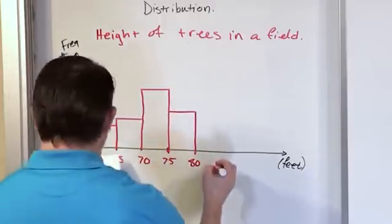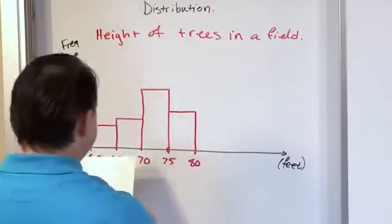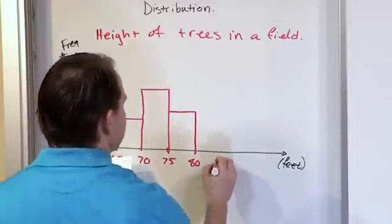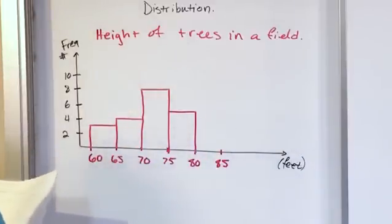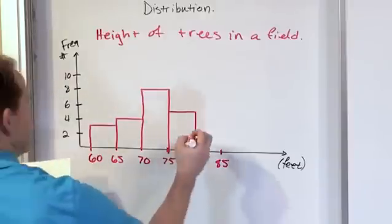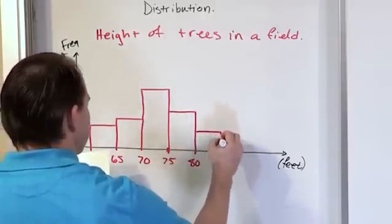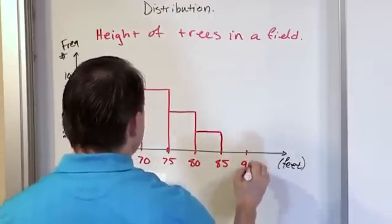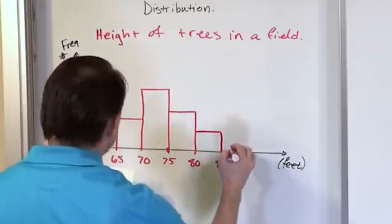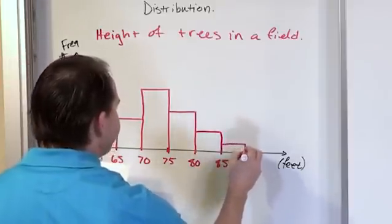And then from 80 to 85, let's say it's down here at about 2. And then from 85 to 90, it's just like one tree. Because it's pretty rare to have a tree that tall. Okay, so this is a histogram.